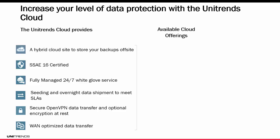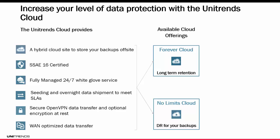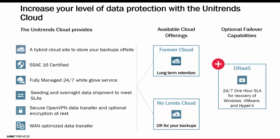When utilizing the Unitrends cloud, it comes in two main offerings — you have to pick one. The two offerings have similar functionality but different retention. The Unitrends forever cloud offers long-term retention in the Unitrends cloud despite whatever retention you have on-site. The Unitrends no limits cloud keeps the exact same retention you have on-site in our cloud. It's basically the difference between long-term retention or DR for your backups — whatever makes sense for your strategy. Once you pick a cloud offering, you can add on the DR as a service failover capabilities, which offers a one-hour SLA for recovery for VMware, Hyper-V, or even your physical Windows servers. We'll go into more detail about that in Module 4.